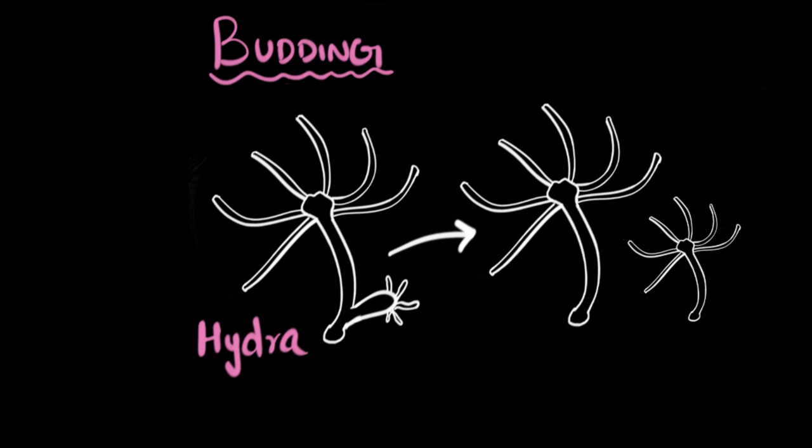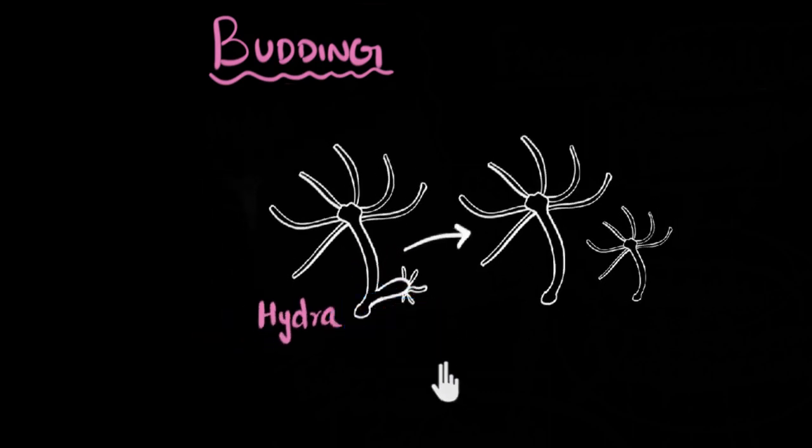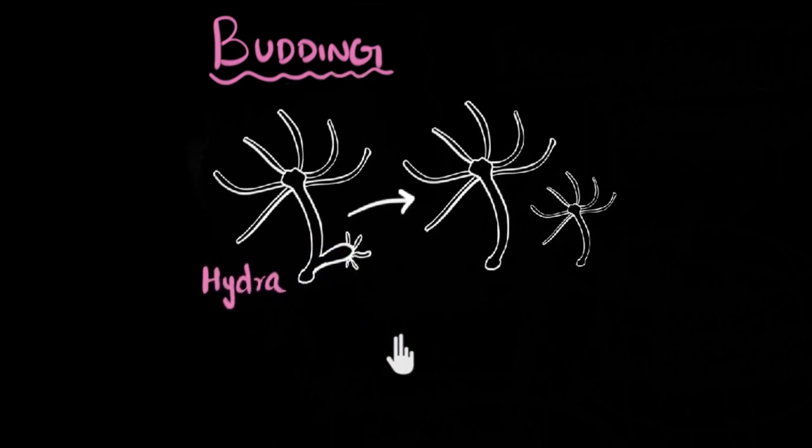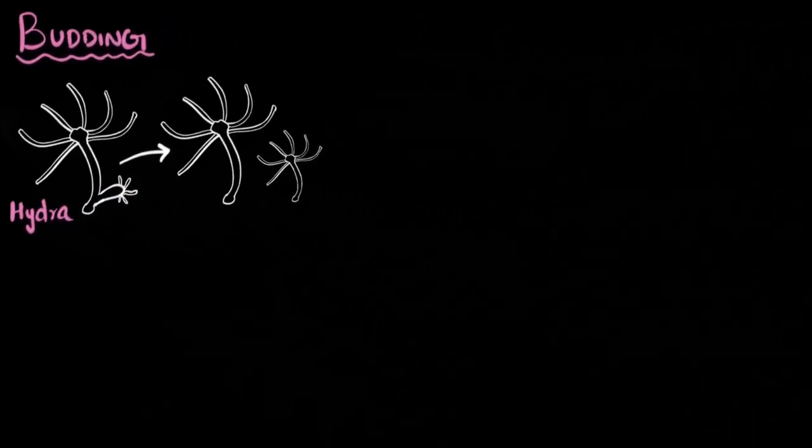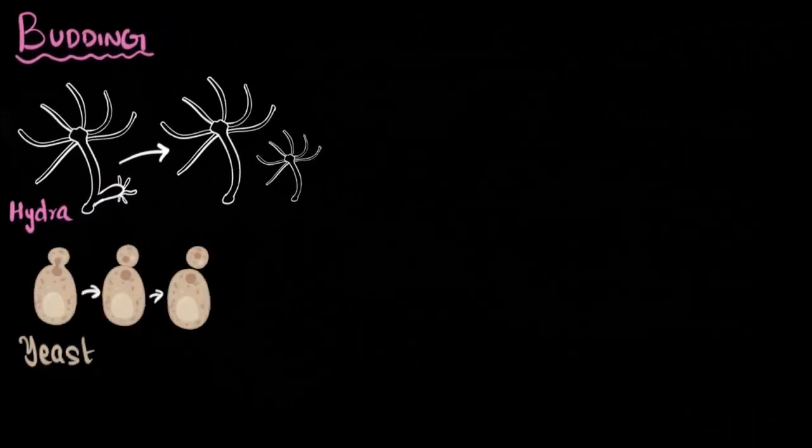Some unicellular organisms can also undergo budding. Let me show you that. If you take the example of yeast, then you see yeast also when it matures and it's ready to reproduce, it grows a small bud, and then that bud separates out, and you get a new individual.